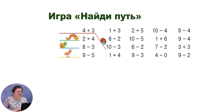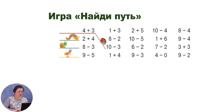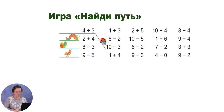Мы с вами раньше выяснили, что быстро складывать и вычитать помогает состав числа. Помните об этом и используйте свои знания. Тренировать сложение и вычитание чисел до пяти поможет игра «Найди путь». Необходимо решить столбики примеров, найти примеры с одинаковыми ответами и по одинаковым ответам проложить путь насекомого.